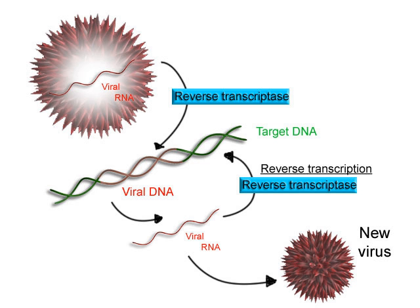In bacteria, it was historically thought that the sigma factor is definitely released after promoter clearance, known as the obligate-release model. However, more recent data have shown that upon and following promoter clearance, the sigma factor is released according to a stochastic release model. In eukaryotes, at an RNA polymerase II-dependent promoter, upon promoter clearance, TFIIH phosphorylates serine-5 on the carboxy terminal domain of RNA polymerase II, leading to the recruitment of capping enzyme. The exact mechanism of how capping enzyme induces promoter clearance in eukaryotes is not yet known.